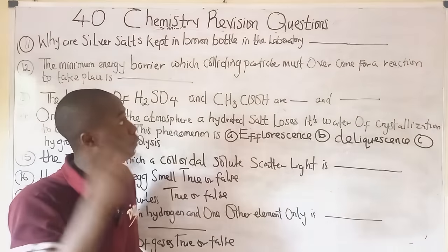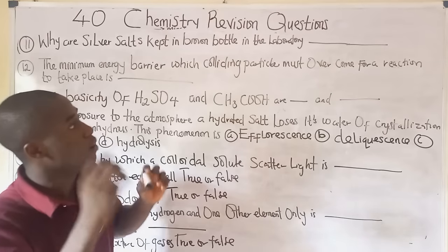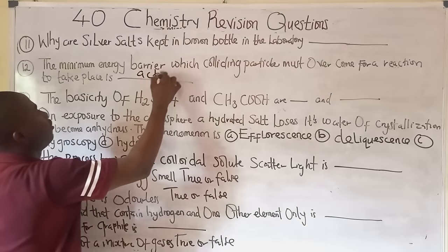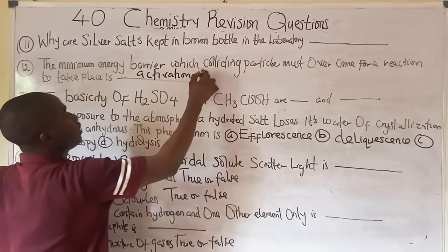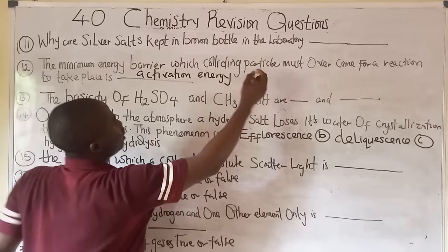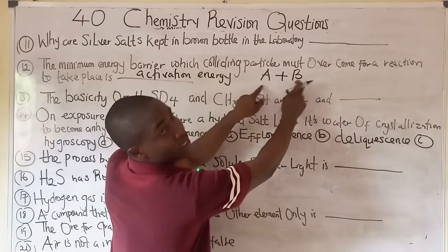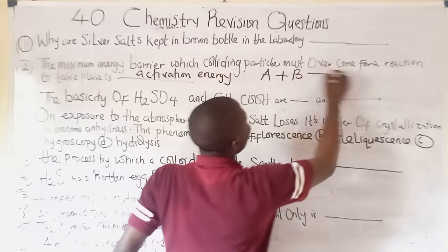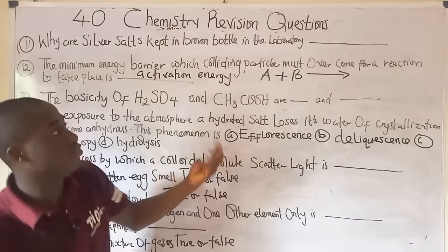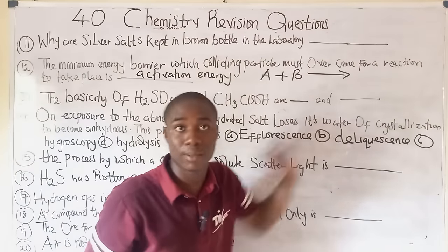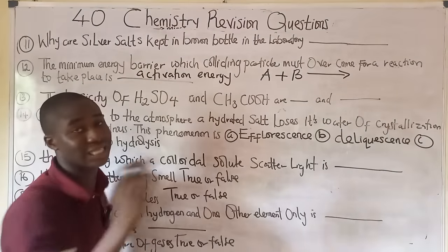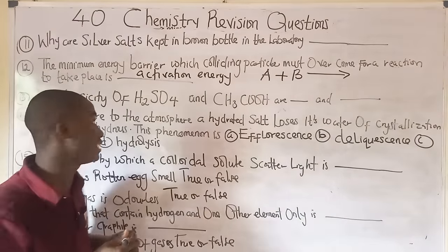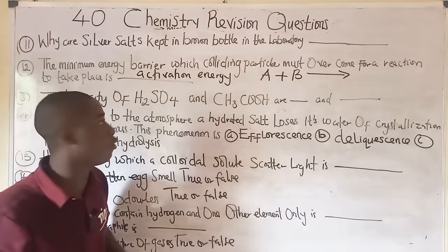Question twelve: the minimum energy barrier which colliding particles must overcome for a reaction to take place is called activation energy. It is the minimum energy required for two colliding particles A and B to react. When they overcome this energy barrier, the reaction takes place.